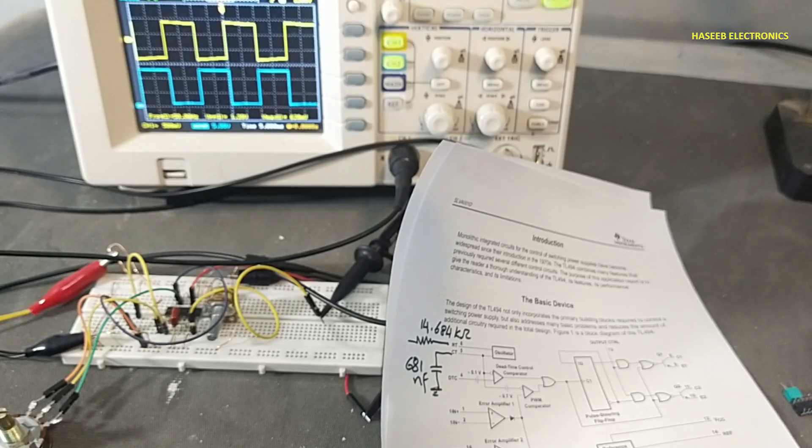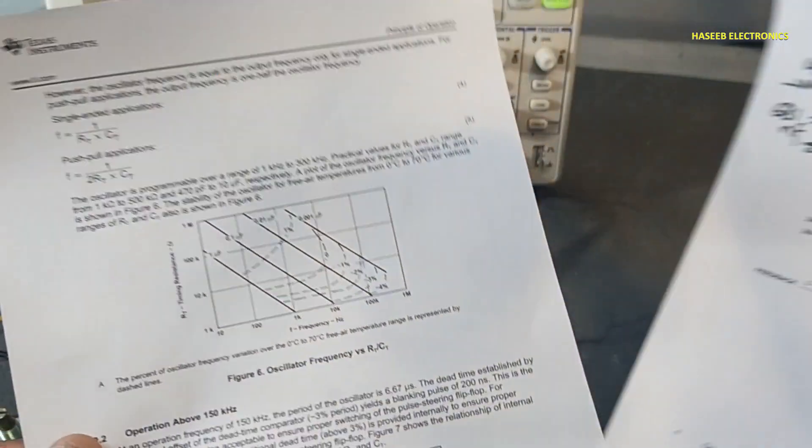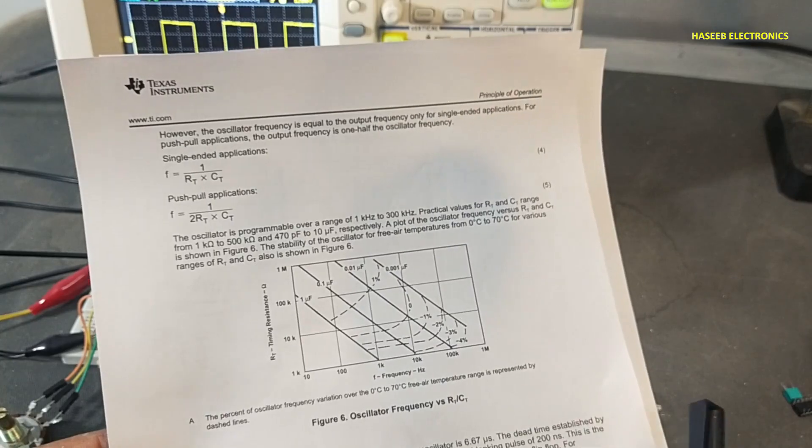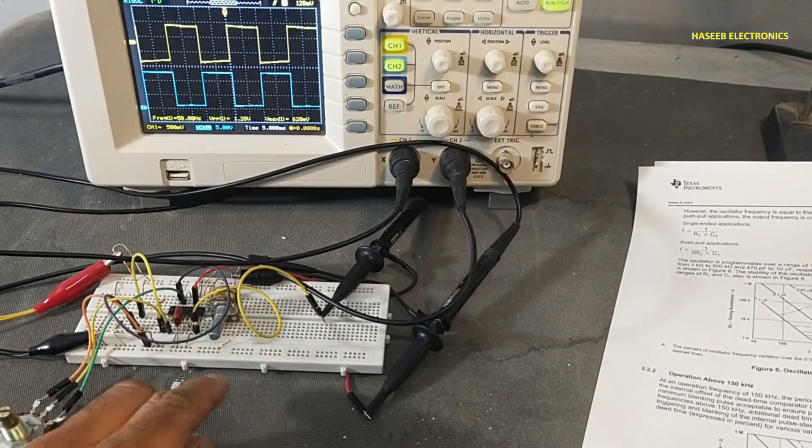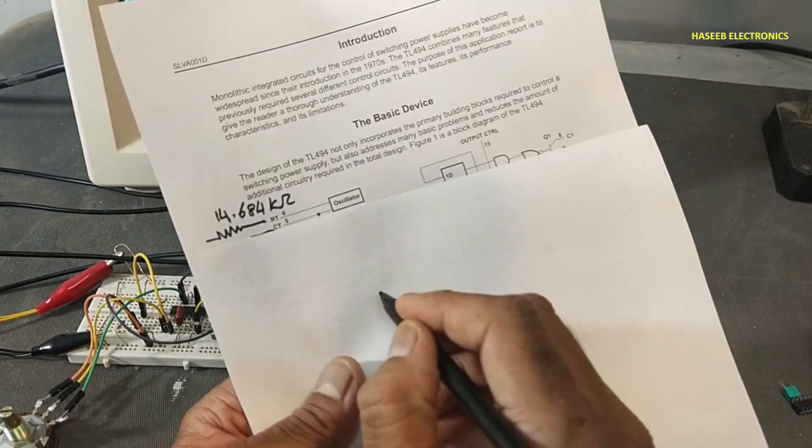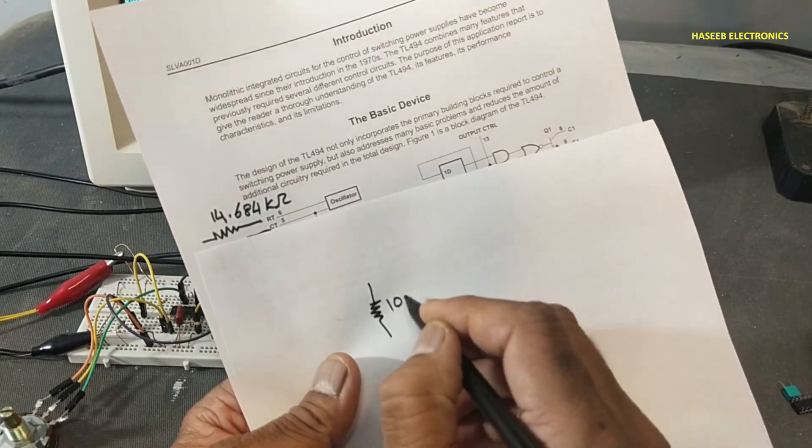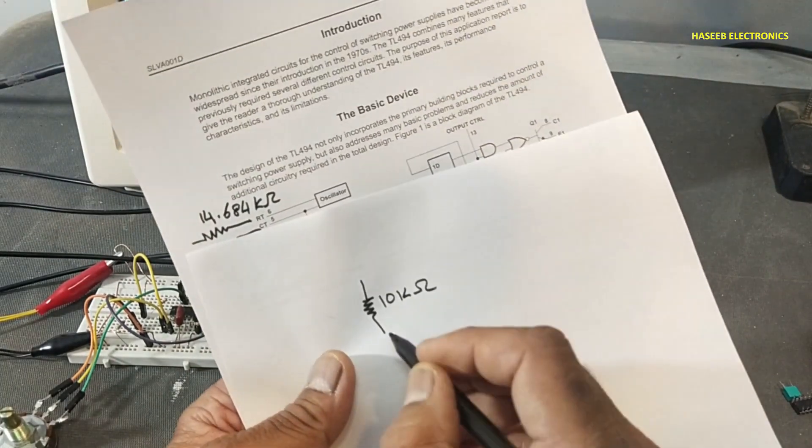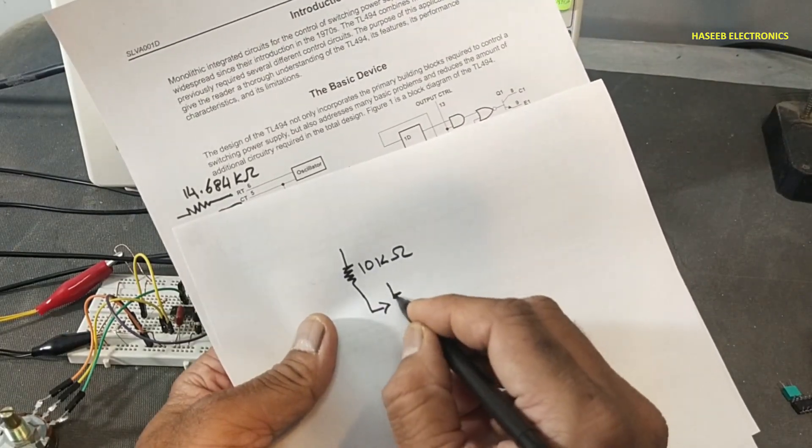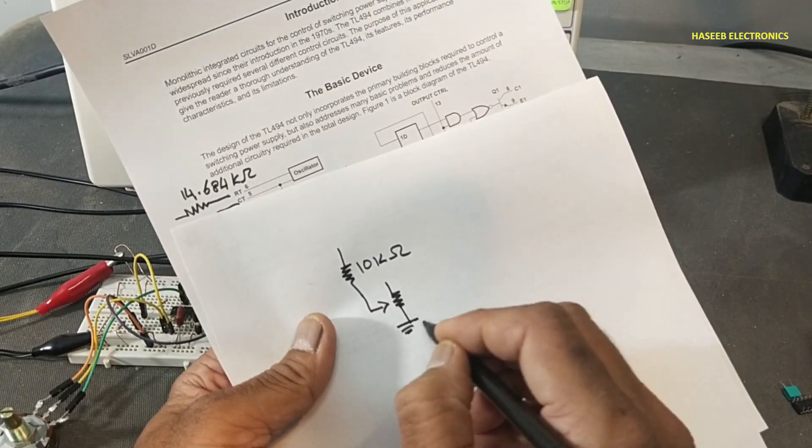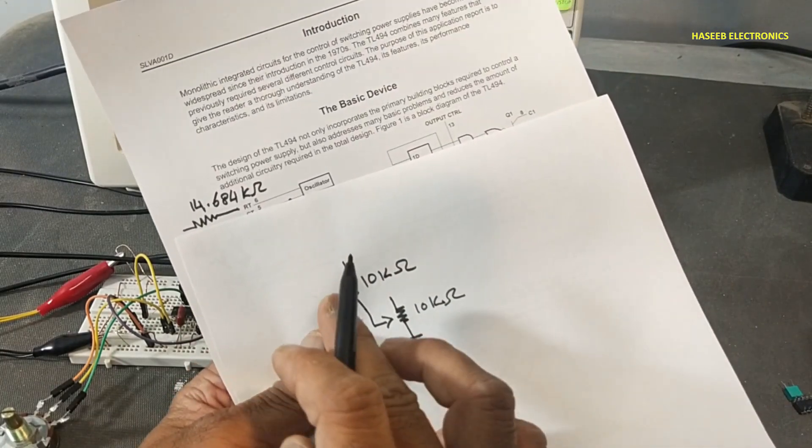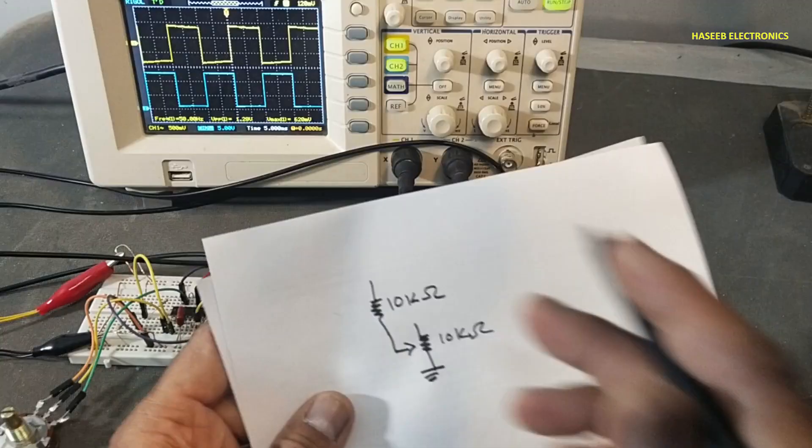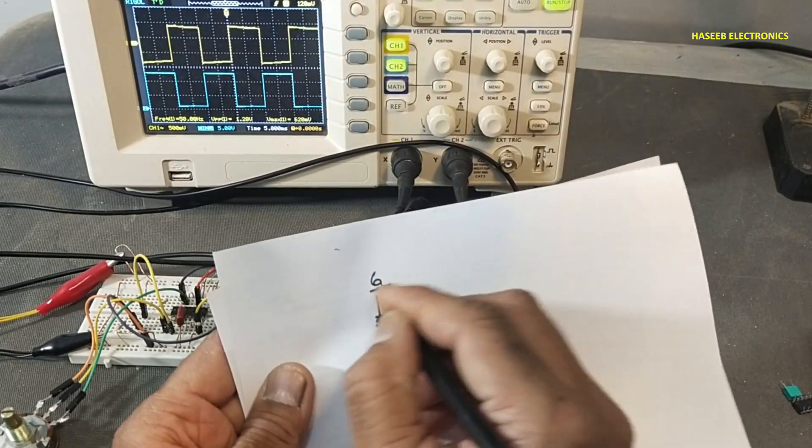When we use practically, there is some tolerance and frequency variation. For that purpose we can use a trim pot or variable resistor. At pin number 6 we can connect 10 kilo ohm resistor, and we can add another variable resistor, we can use 10 kilo ohm so we can adjust and compensate the variation. This will connect to pin number 6, that is rt pin.